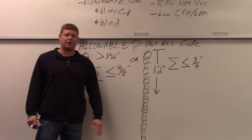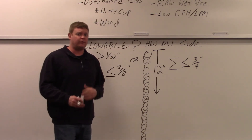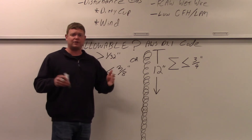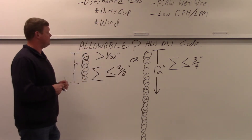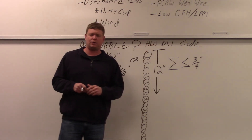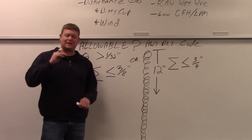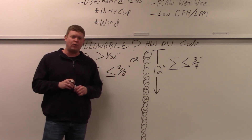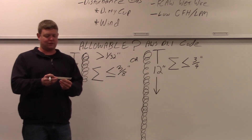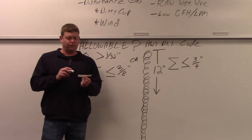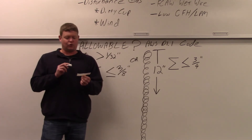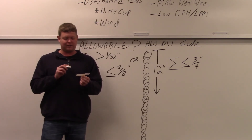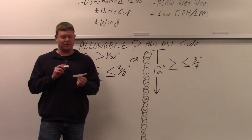Is porosity allowable? I looked up AWS D1.1 Structural Steel Welding Code. For all groove welds and fillet welds, the sum of piping porosity greater than 1/32nd of an inch in diameter shall not exceed 3/8ths of an inch in any linear inch of weld, and shall not exceed 3/4 of an inch in any 12-inch length of weld.